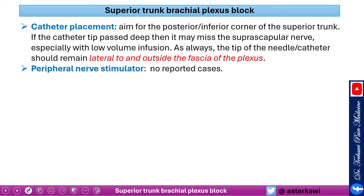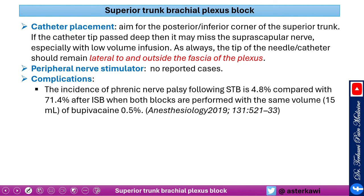At the time of this lecture, there are no reported cases of peripheral nerve stimulator use for the superior trunk block. The incidence of phrenic nerve palsy following the superior trunk block is about 5%, compared with approximately 70% for the interscalene block — as demonstrated in the first randomized controlled trial published in Anesthesiology comparing the two approaches using the same volume and injectate.